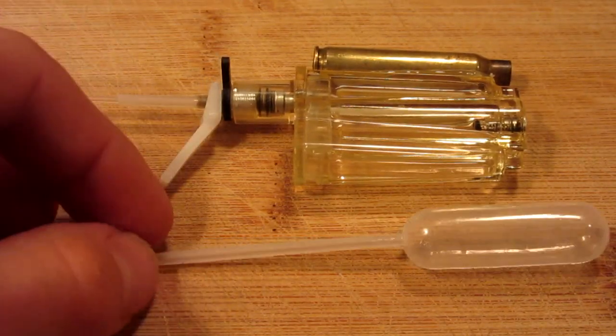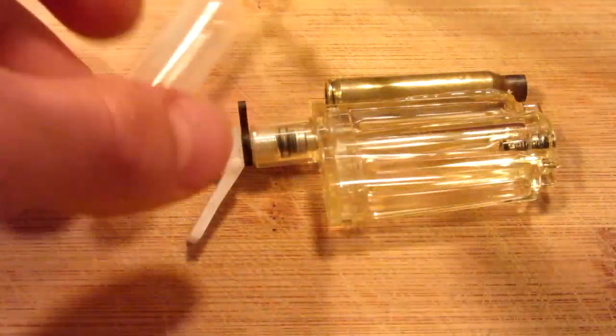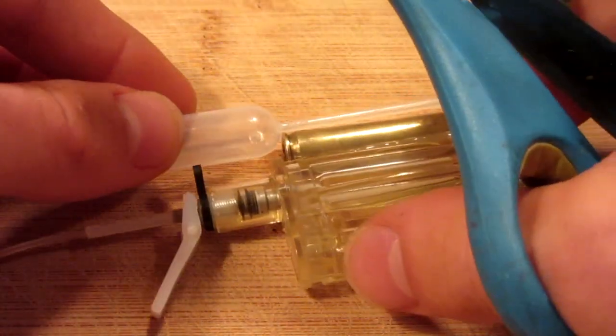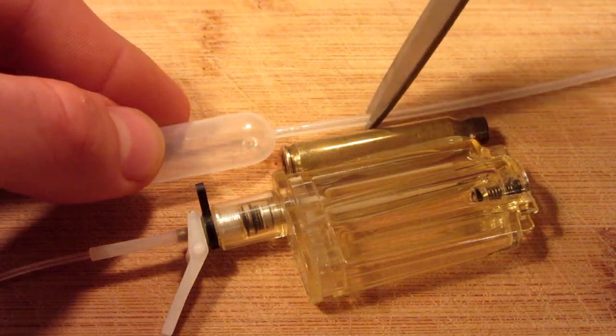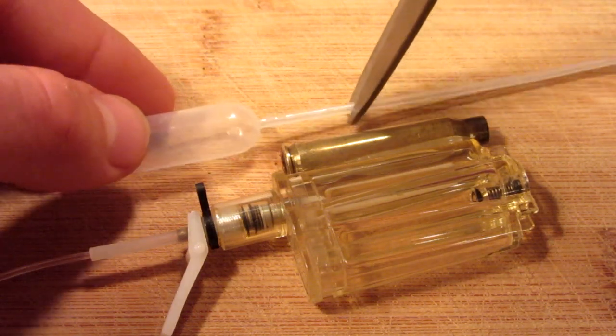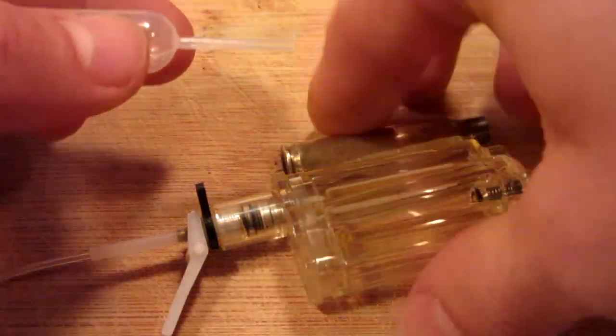Next up, we're going to go ahead and shorten the pipette by cutting it to a length which, when fully placed inside of the bullet, will leave about half an inch to three centimeters just inside the bullet. So I'm going to go ahead and cut it right there.